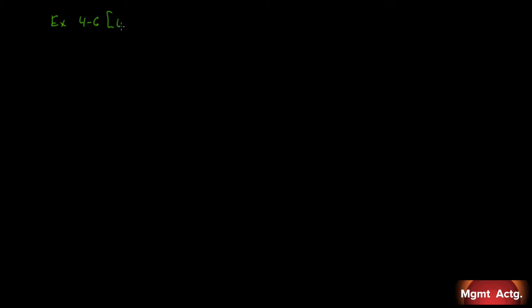Now let's do Exercise 4.6, learning objective number 6: compute the level of sales required to attain a target profit. ING Corporation produces and sells only one product. Its selling price is $100 and its variable cost is $80, giving a contribution margin per unit of $20. The monthly fixed expense is $20,000.